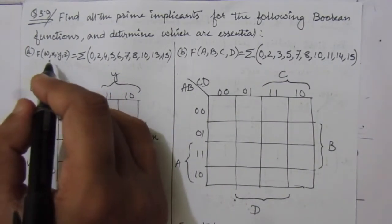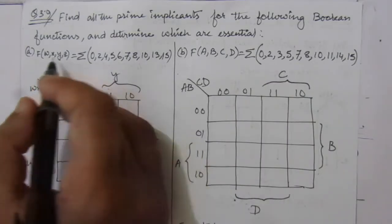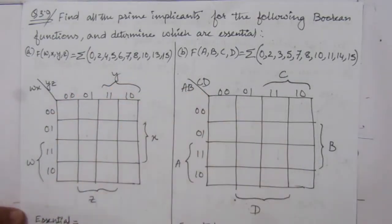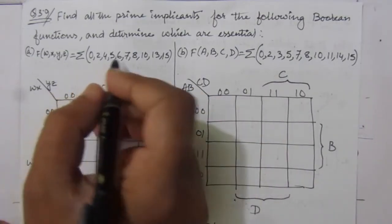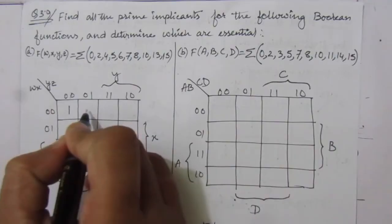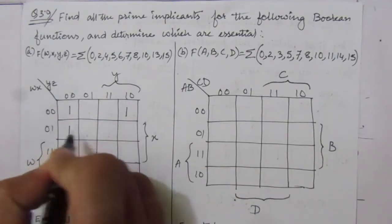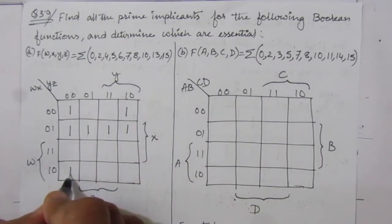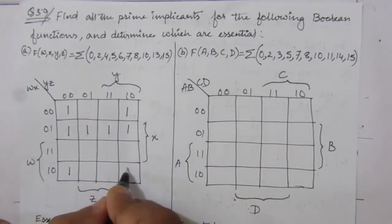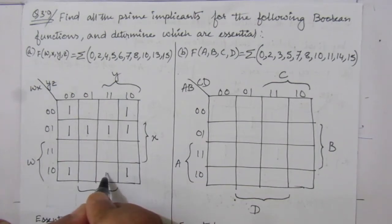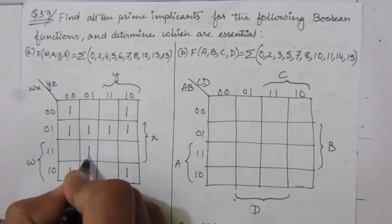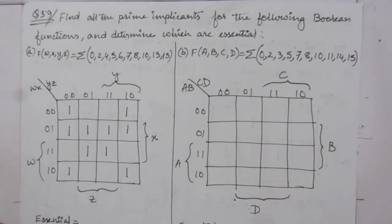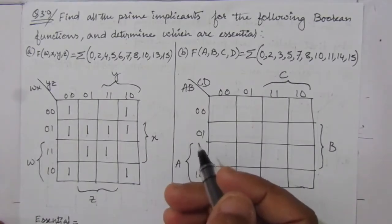The first problem is f(w, x, y, z). We are given 4 input variables and a sum of minterms expression: minterms 0, 2, 4, 5 — actually all minterms 0 through 15. So we have made the full variable map of this given boolean function.